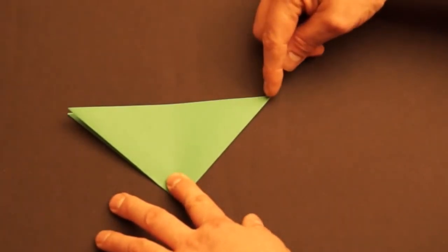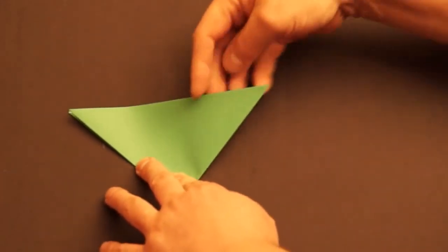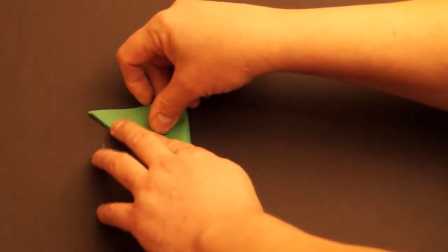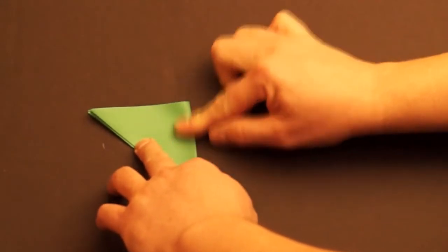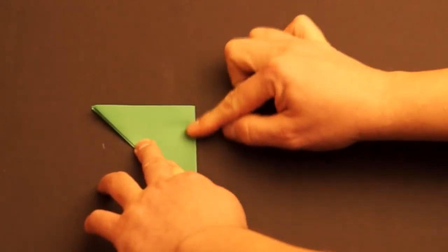One more time, let's take the right corner and fold over to the left corner. This time it will be harder to press down because the layers are stacked.